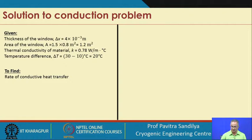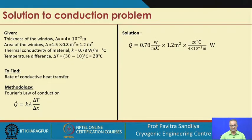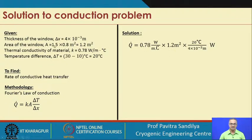We have to find the conductive rate of heat transfer. For this we use Fourier's law of heat conduction. Plugging in the values: k = 0.78 W/m·°C, area = 0.8 × 1.5 = 1.2 m², temperature difference = 20°C, and thickness = 4 mm = 4 × 10⁻³ m. All values are in SI units.